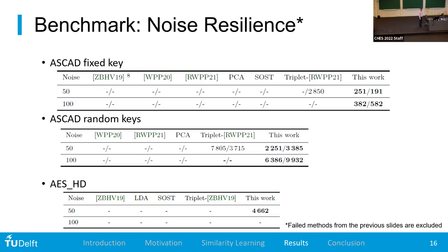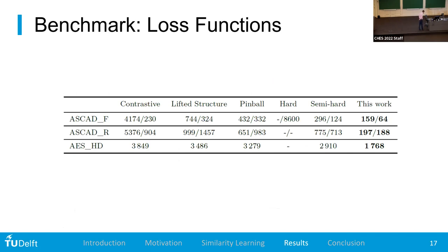One could also ask what happens when you add more noise or desynchronization to the dataset. We tested that. The comparison was a bit more difficult because not every prior work had all the setups we wanted to consider. But we did see that the same triplet network used before for embedding still works very nicely for new attacks, even when you add desynchronization. We also tested different loss functions. There are specific loss functions just for similarity learning: contrastive loss, lifted structure, pinball, hard, semi-hard, and others. The hybrid one worked very nicely because it included information about the labels.